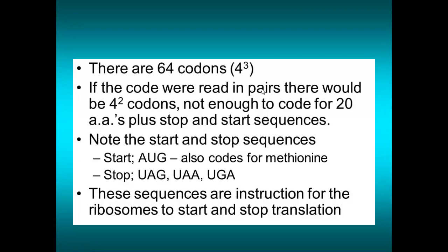There are 64 codons in all — 4 to the power of 3 — because 4 to the power of 2 would only give 16, which is not enough to code for our 20 amino acids. There are also start and stop sequences. The ribosome needs instructions about when to start and stop reading. Our start codon is A, U, G, which also codes for the amino acid methionine. Our stop codons are U, A, G; U, A, A; and U, G, A.